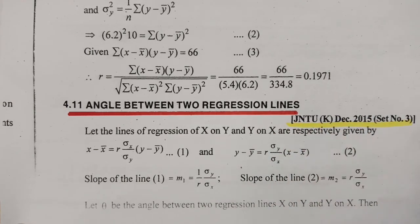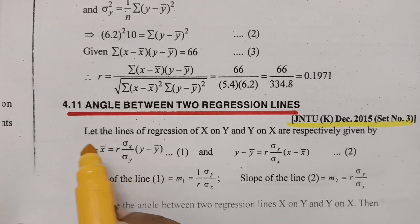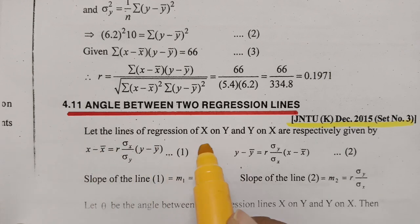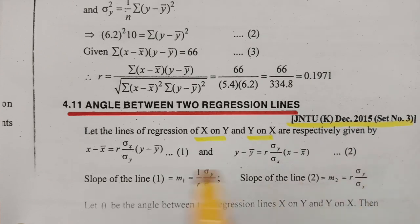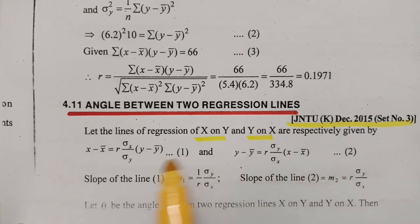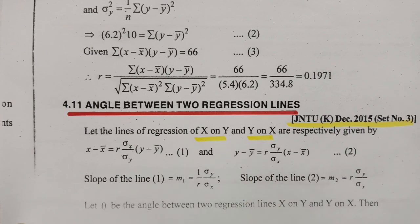This is a very important and repeated question. There are two lines — let the regression lines of x on y and y on x be respectively given. We have to find the angle between these two lines, which is so important.